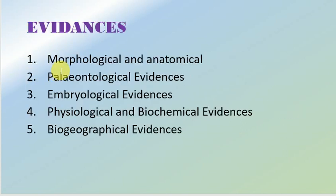The first is morphological and anatomical evidences, then paleontological evidences, then embryological evidences, then physiological and biochemical evidences, and biogeographical evidences. Now we will study morphological and anatomical evidences in detail.